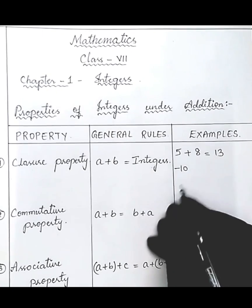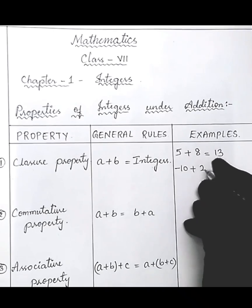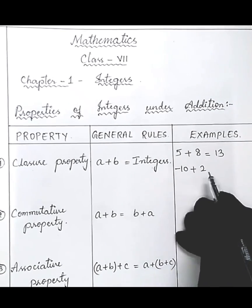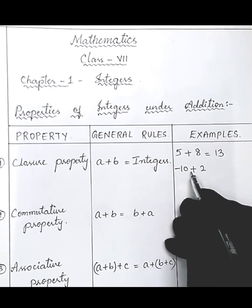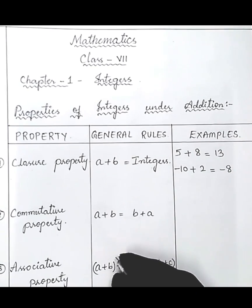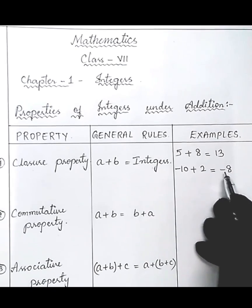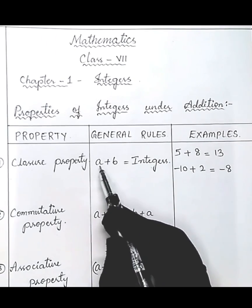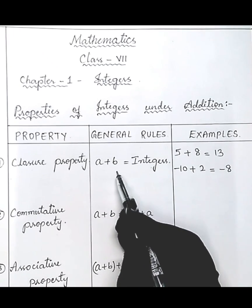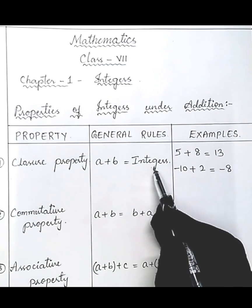Let's see one more example. Minus 10 is also an integer and minus 2 is also an integer. When you add these two integers we get minus 8. Minus 8 is also an integer. So when you add two integers — a and b — you also get an integer. That is the closure property.